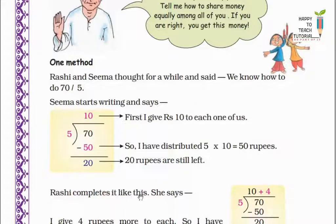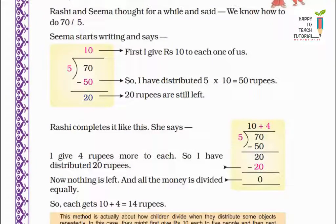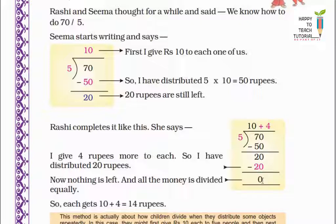Rashi completes it like this: I give 4 rupees more to each — main sabko 4 rupees aur dungi. So 5 into 4 equals 20. 20 minus 20 equals 0, that means nothing is left and all the money is divided equally. So each gets 10 plus 4 equals 14 rupees distributed among 5 children.